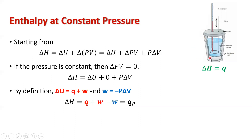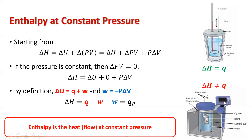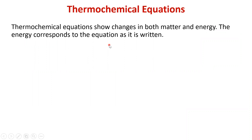So delta H — the enthalpy change for a system — equals the heat given off or absorbed at constant pressure. In a regular calorimeter, because the pressure is constant, delta H equals Q. However, in a bomb calorimeter, pressure is not constant, so the change in enthalpy does not necessarily equal Q because we have to account for the calorimeter itself.